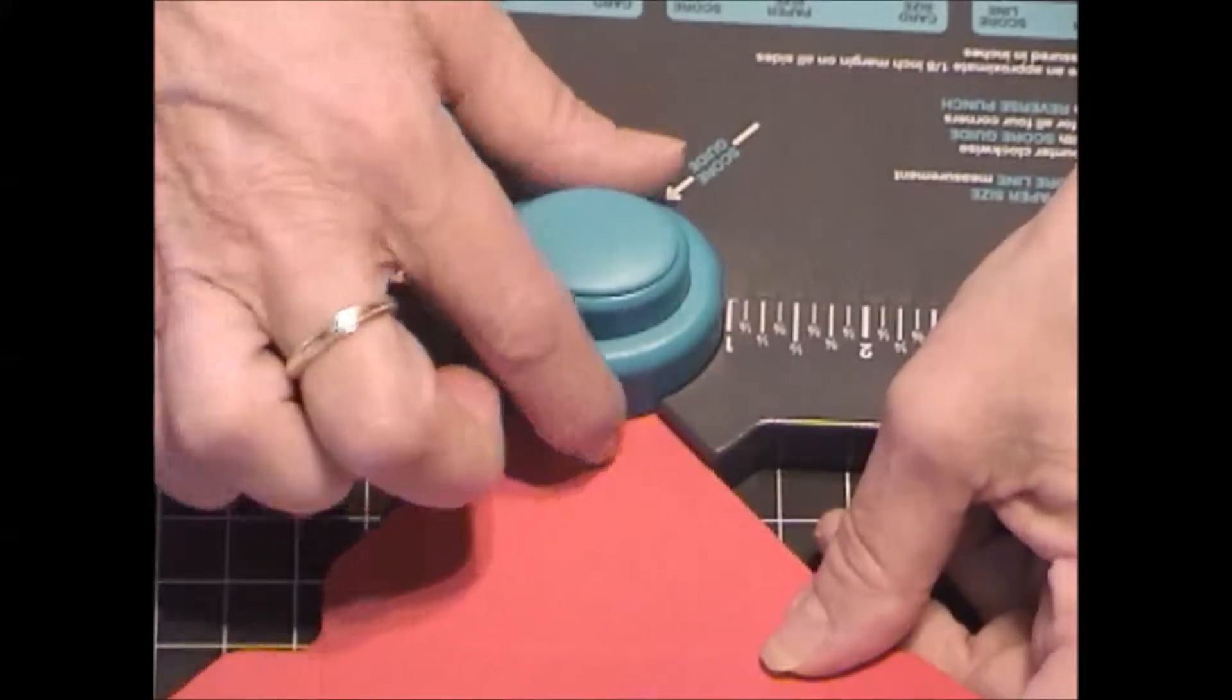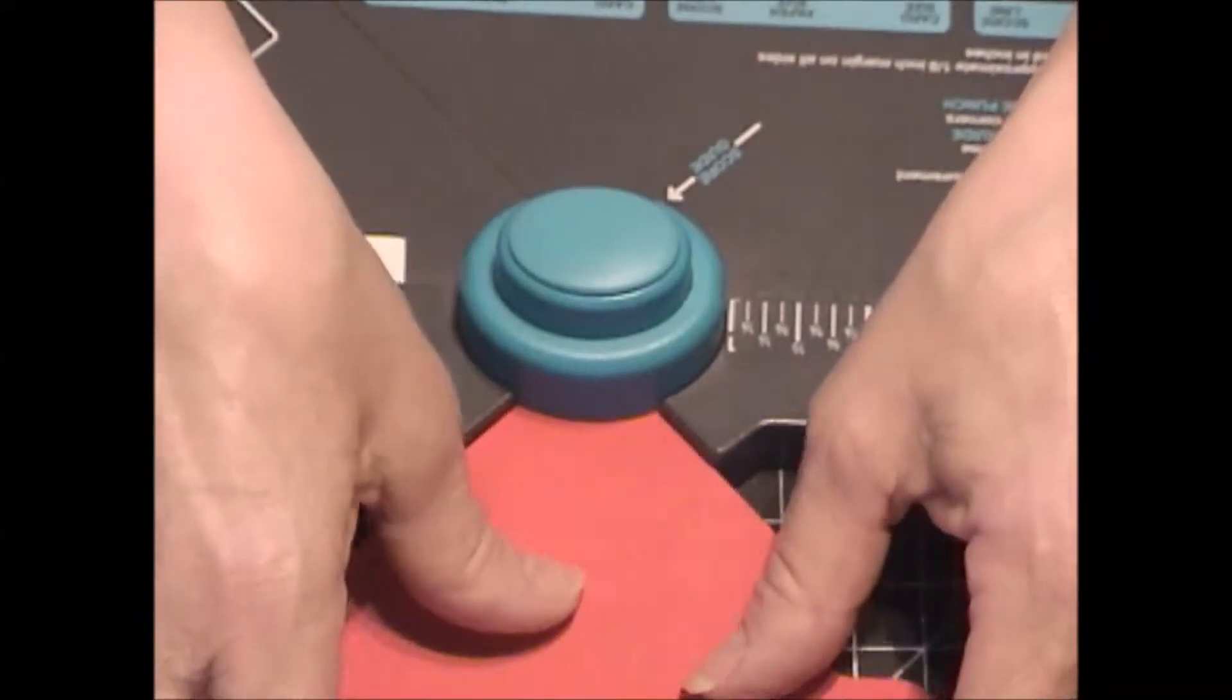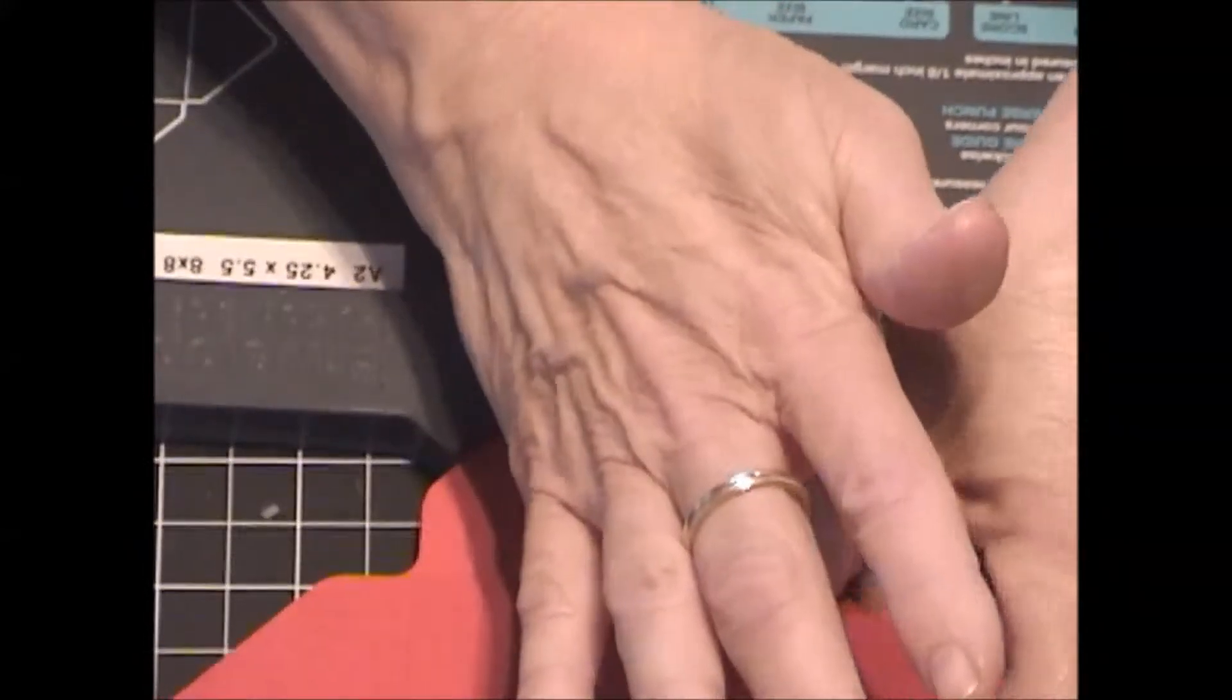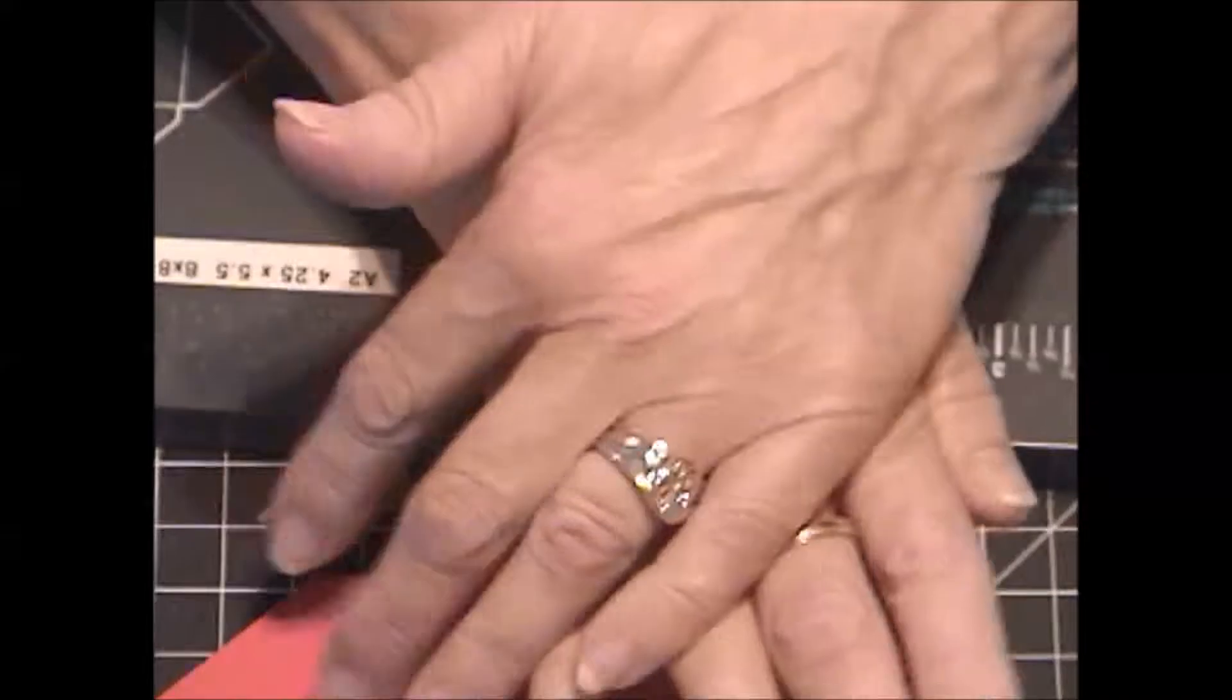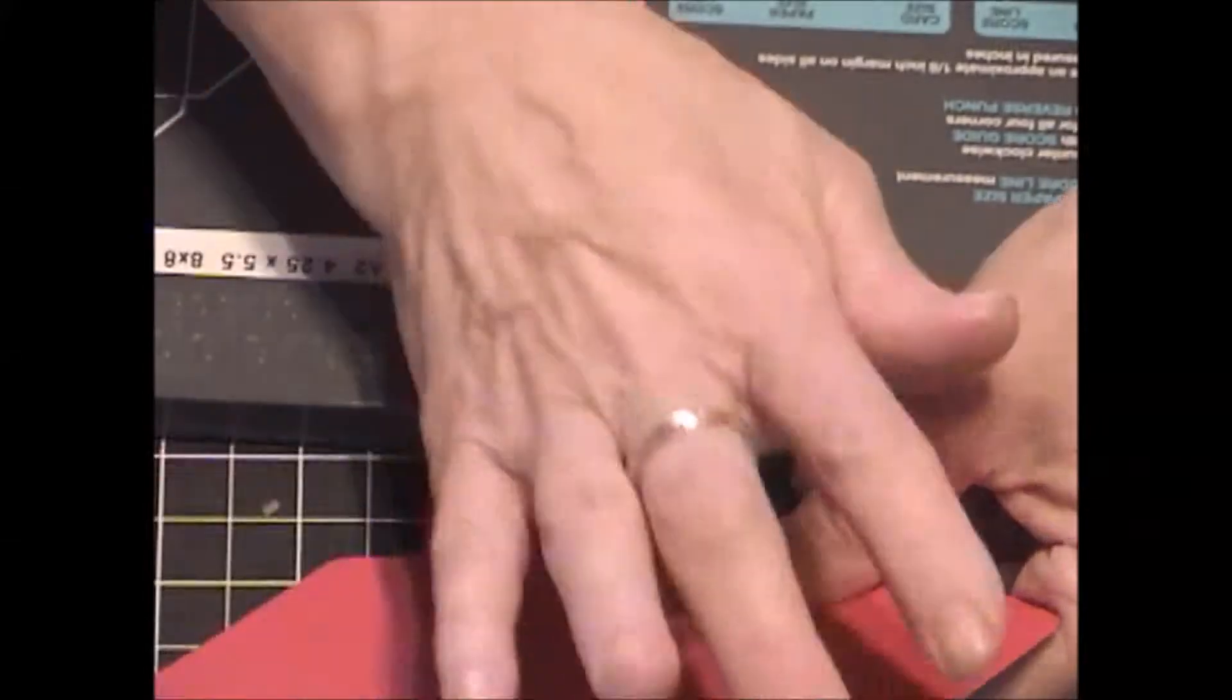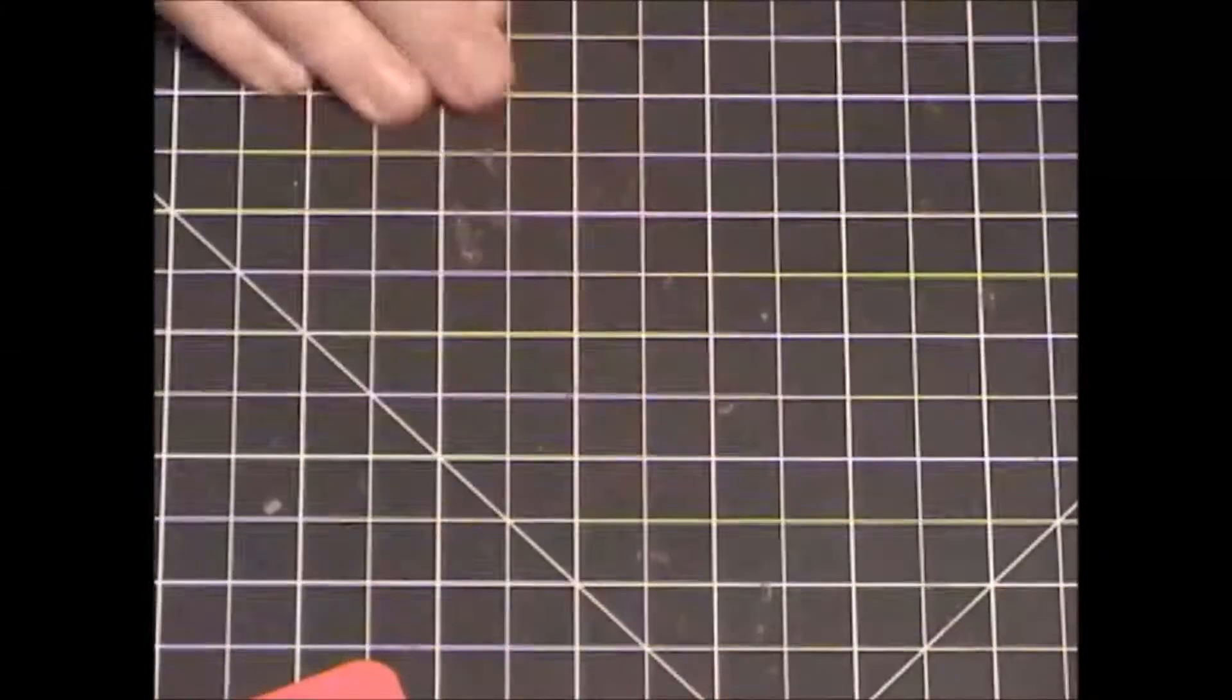Now, we're going to use the little slot at the back and make our corners round. Slide it in there and punch it. And we're going to set that aside.